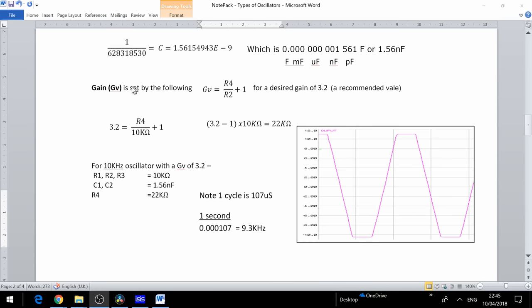Finally we can set the gain for this circuit, and this is determined by R4 over R2 plus 1. In this example we will aim for a desired gain of 3.2. Therefore 3.2 would equal R4 divided by 10,000 ohms plus 1. That gives us 3.2 minus 1 which will be 2.2 times 10 kilo ohms, which equals 22 kilo ohms. So for a desired oscillator of 10 kilohertz with a gain of 3.2, the appropriate values for R1, R2 and R3 would be 10 kilo ohms, C1 and C2 would be 1.56 nanofarad, and R4 would be 22 kilo ohms.